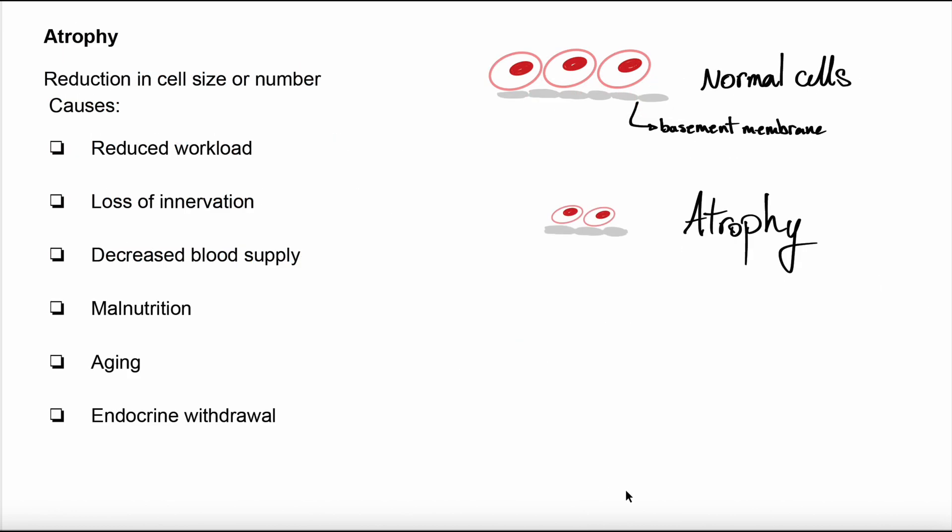Atrophy. Atrophy results from decreased protein synthesis and increased degradation. Cells shrink in size, often undergoing autophagy, which is self-digestion. As you can see here, we have bigger cells and now in atrophy, we have smaller and lower number of cells. It is not necessarily pathological.